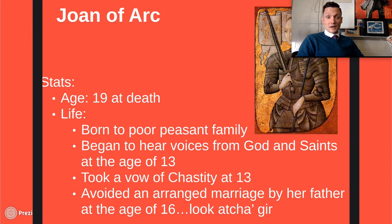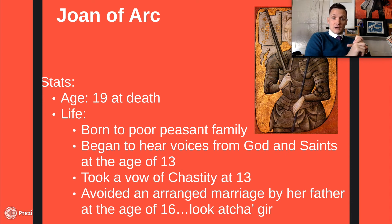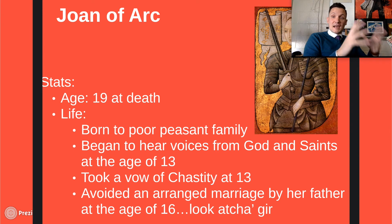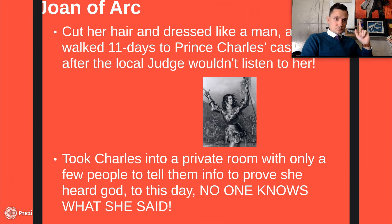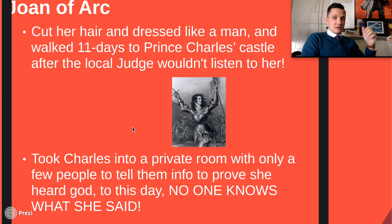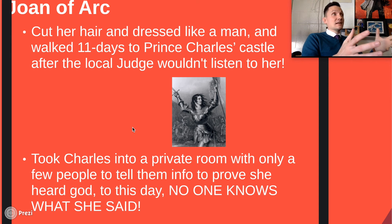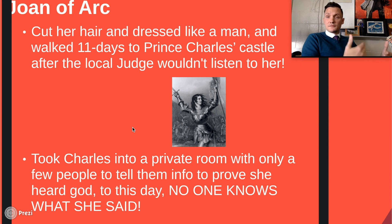One of the most famous women of all time: Joan of Arc. She fights for France. She was born to a poor peasant family and apparently began to hear the voices of God and saints at the age of 13. She took a vow of chastity at age 13, saying she would not be held down by any man or marriage. She also avoided an arranged marriage by her father at age 16 and ran away.